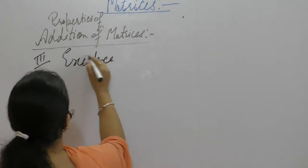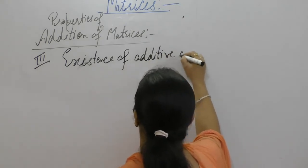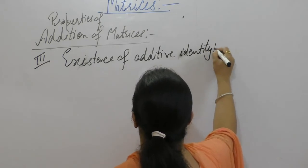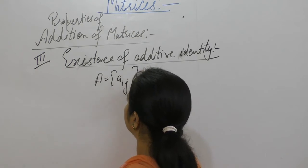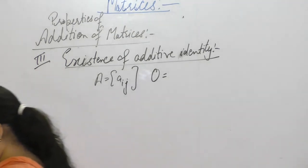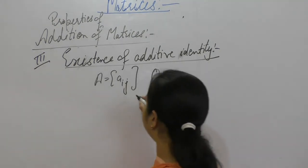Existence of additive identity. Let A be any matrix Aij and zero is a null matrix, both are of same order M into N.